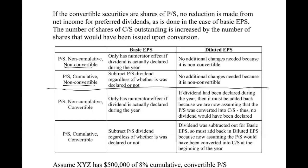The key things we're comparing here are cumulative versus non-cumulative. Remember, if it's cumulative, we always subtract the dividend regardless of whether it is declared or not. For non-cumulative, it only has a numerator effect if it is actually declared during the year. So that's when we're doing basic earnings per share — cumulative is the easy one, always subtract it. Non-cumulative, it has to be declared, so make sure you keep that straight.